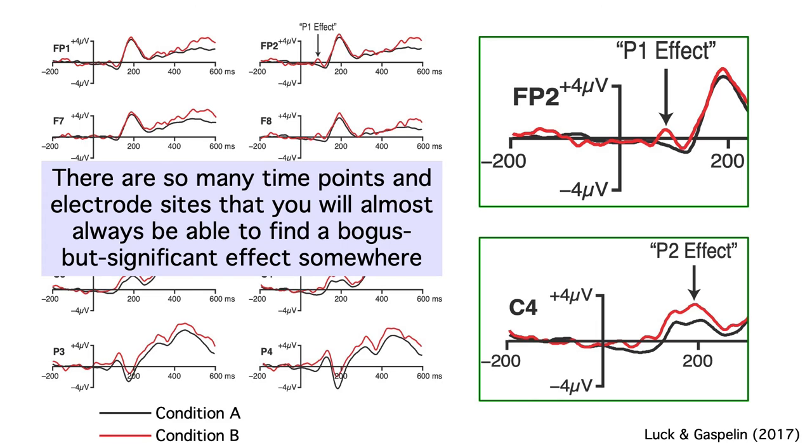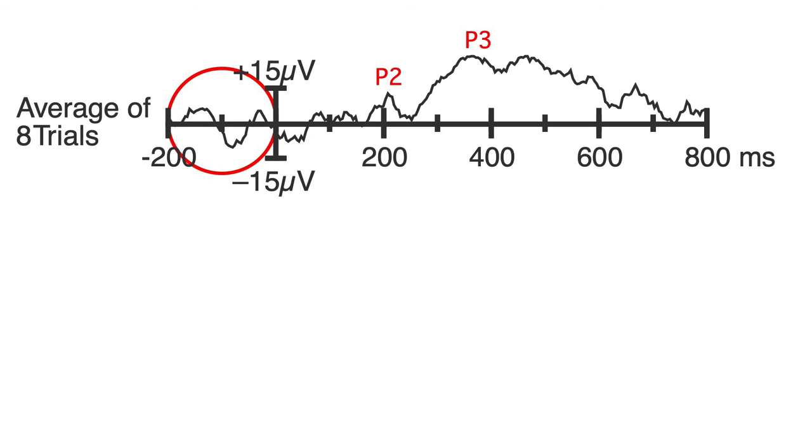Remember, there are so many data points and electrode sites in an ERP study that you can almost always find a significant but bogus effect somewhere. So when you see an effect like this P2, you should be skeptical, even if it's statistically significant.